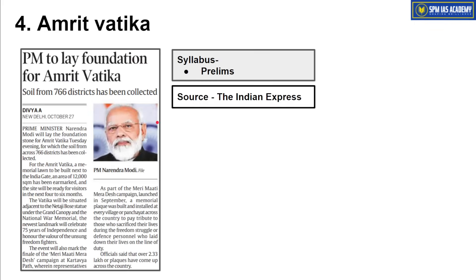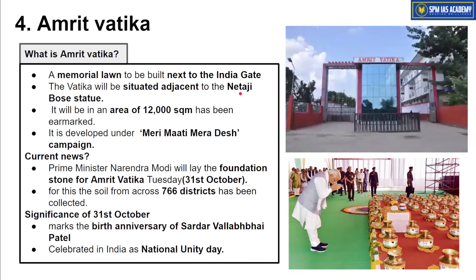The next article is about Amrit Vatika, important from a Prelims exam point of view. Amrit Vatika is a memorial lawn at India Gate where the Netaji Subhash Chandra Bose statue is located. It covers 12,000 square meters at India Gate and is being developed under the 'Meri Mati Mera Desh' campaign by the Government of India. Inside Amrit Vatika, soil has been brought from 766 districts across the country, and different kinds of trees will be planted there. This way, Amrit Vatika is a garden made from soil brought from different corners of the country, symbolizing national unity.